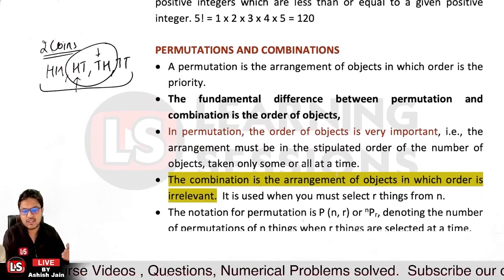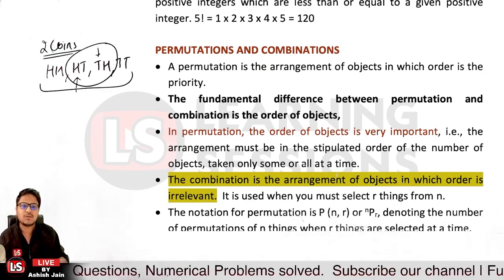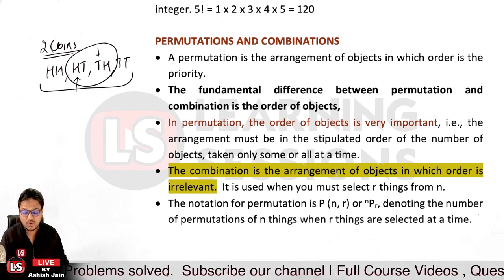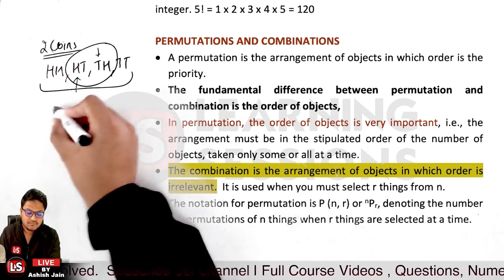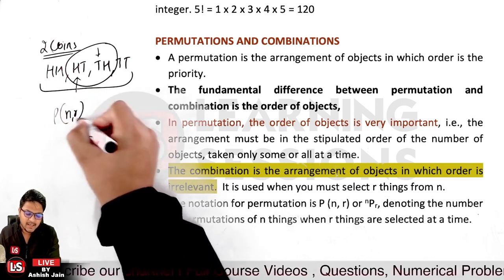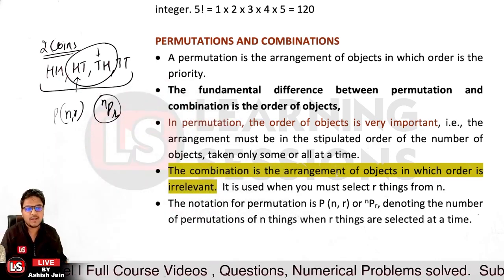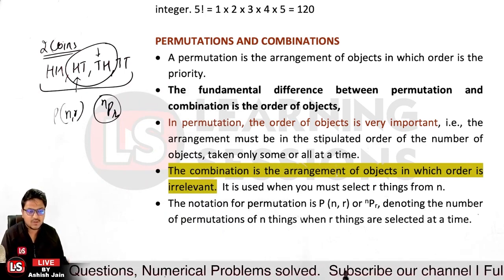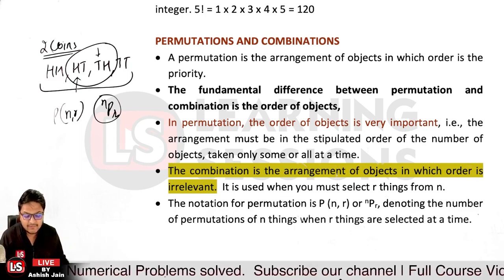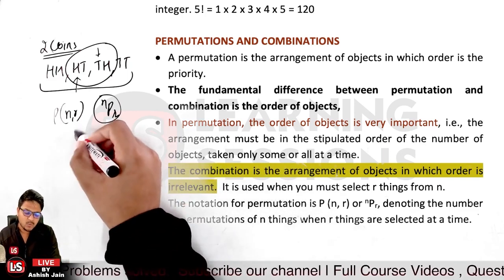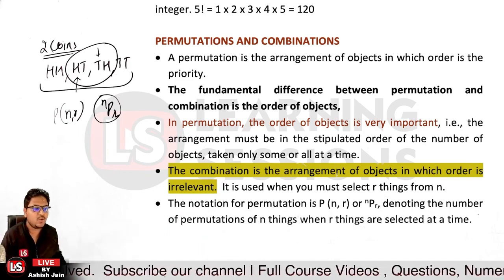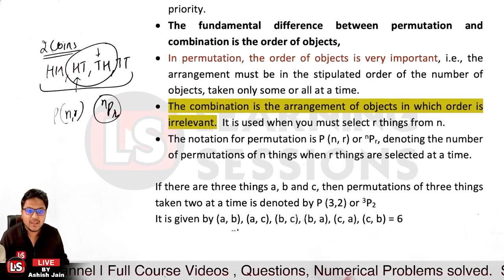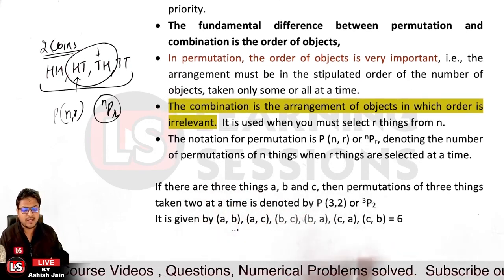In permutation, the order of the objects is very important, but that is not the case with combinations. The notation for permutation is NPR, where N is the total number of things and R is the number selected at a time. For example, selecting one ball out of three is written as 3P1.